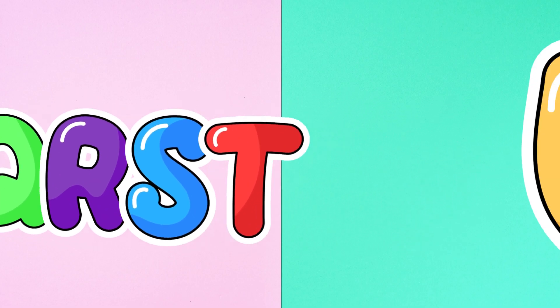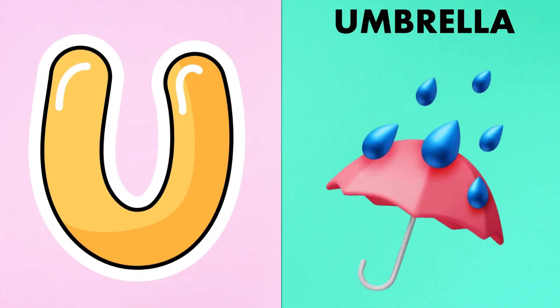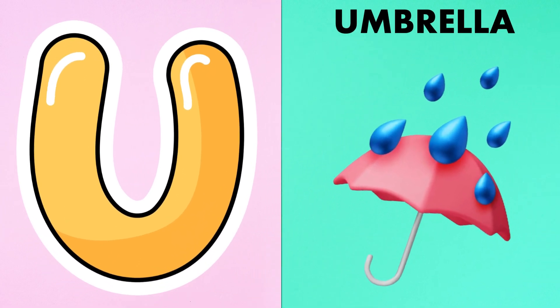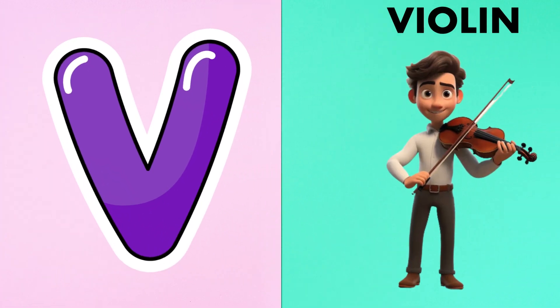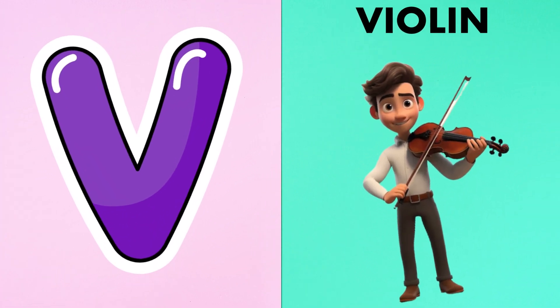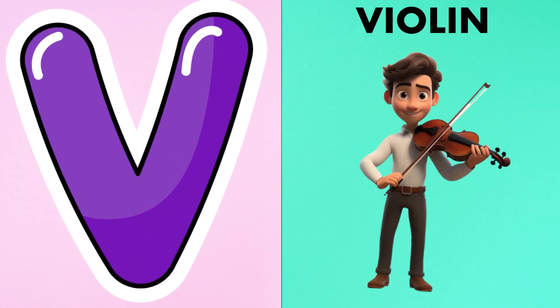U is for umbrella, u-u-umbrella. V is for violin, v-v-violin.